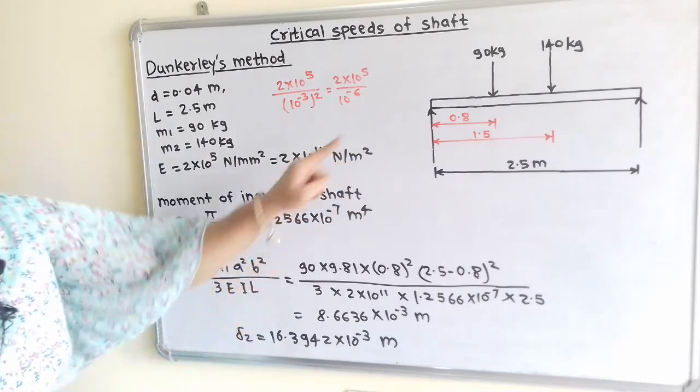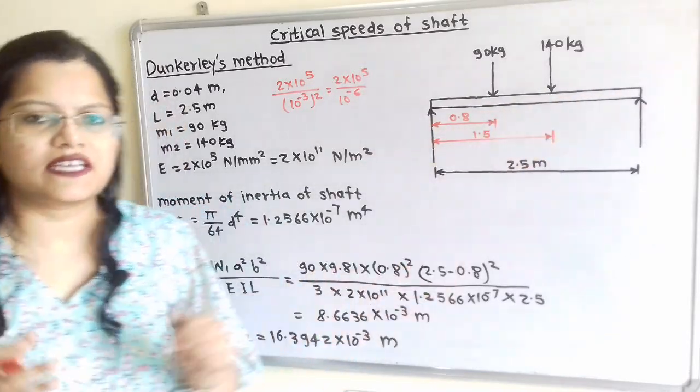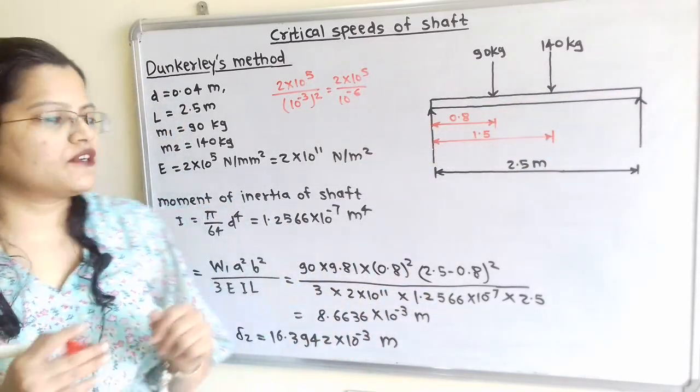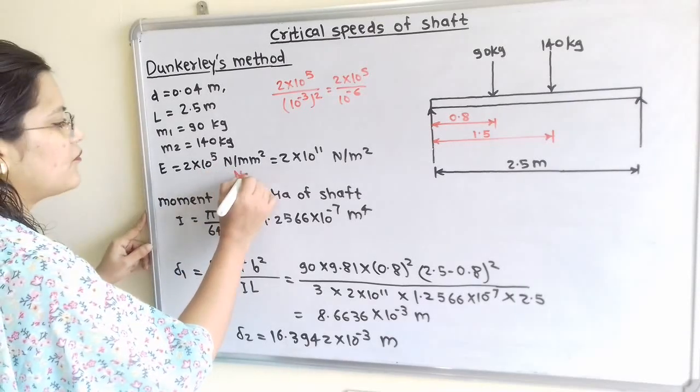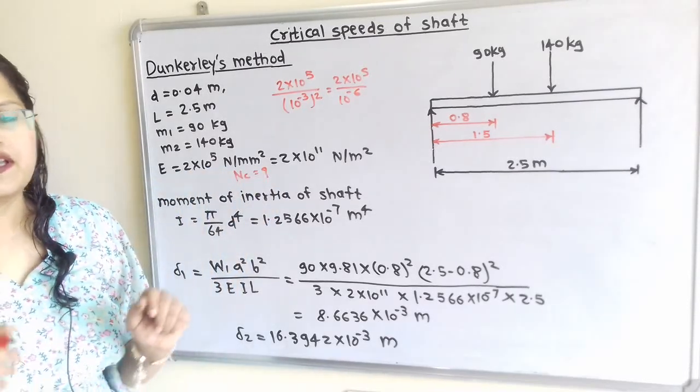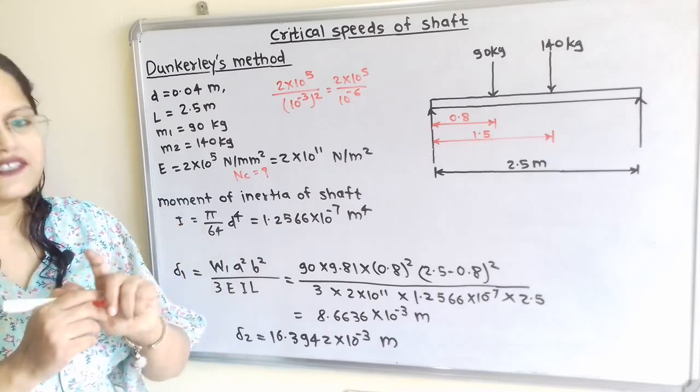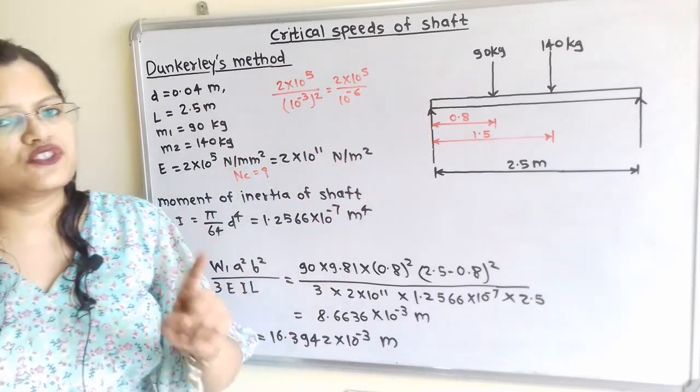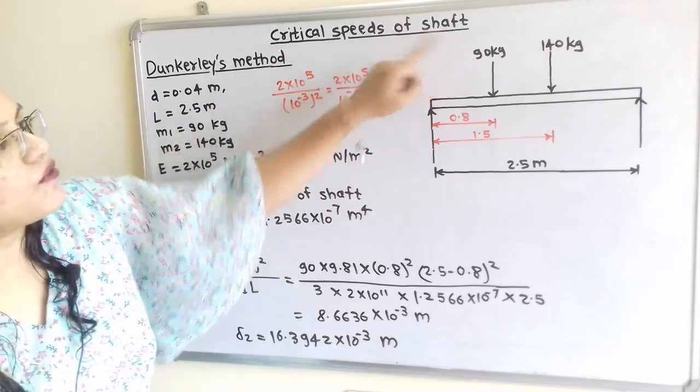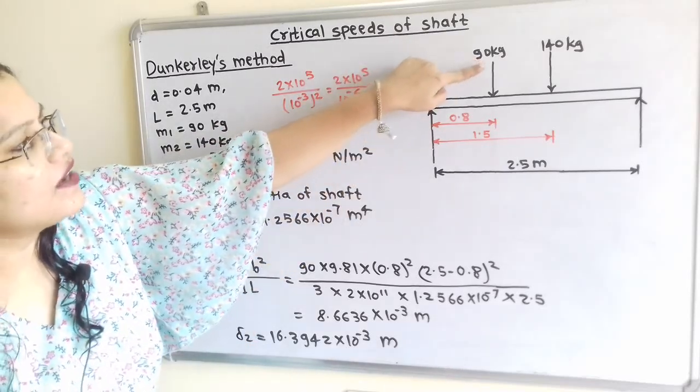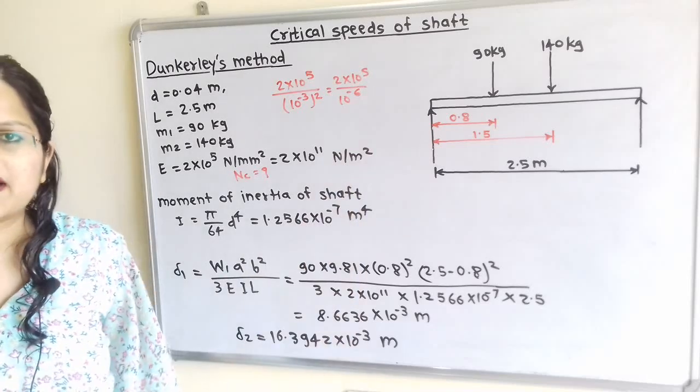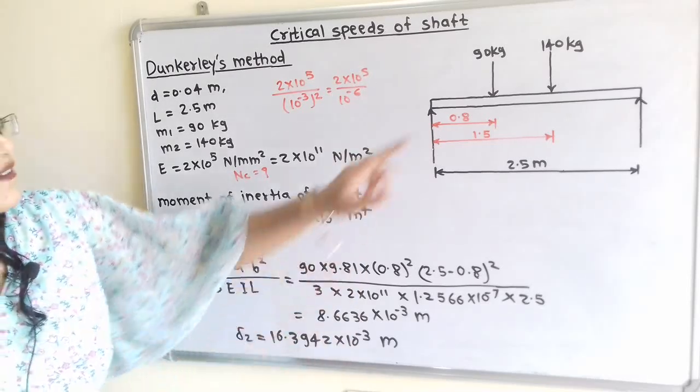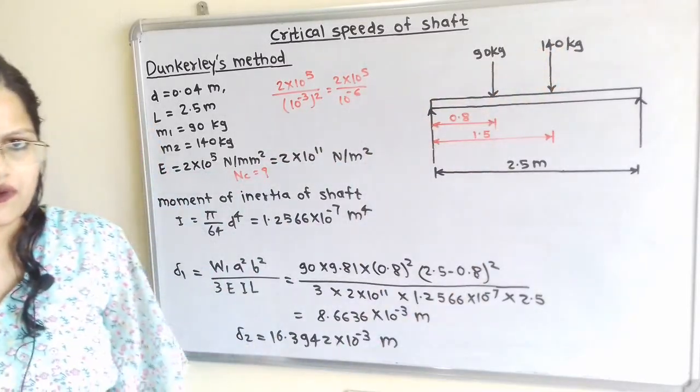Now for this question mass of the shaft is negligible and we have to find out the critical speed of the shaft, that means we have to find out the value of Nc. Now the total deflection of the shaft if we observe from the diagram is due to the point load. That is, we have to calculate deflection delta due to this point load 90 kg and then we have to find out the second static deflection due to this point load 140 kg.